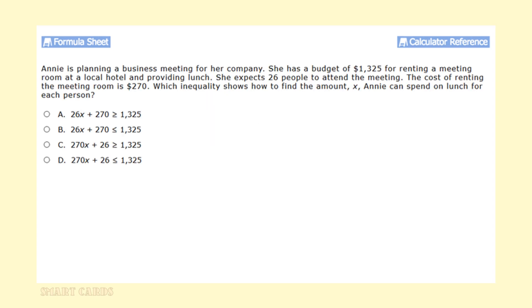Annie is planning a business meeting for her company. She has a budget of $1,325 for renting a meeting room at a local hotel and providing lunch. She expects 26 people to attend the meeting. The cost of renting the meeting room is $270, which inequality shows how to find the amount x Annie can spend on lunch for each person.